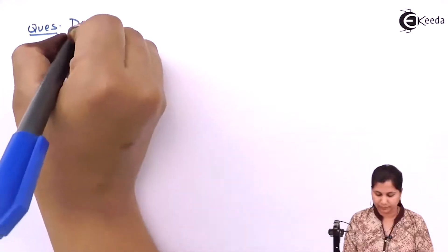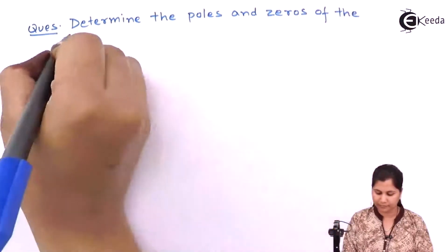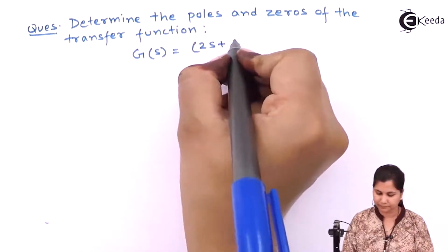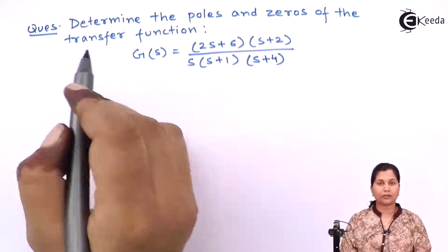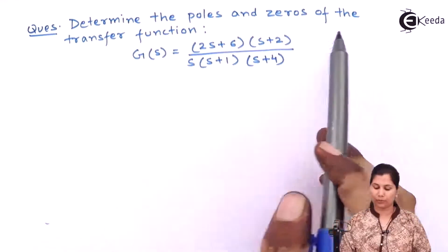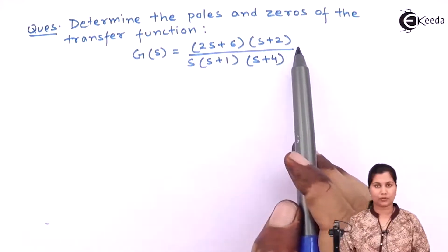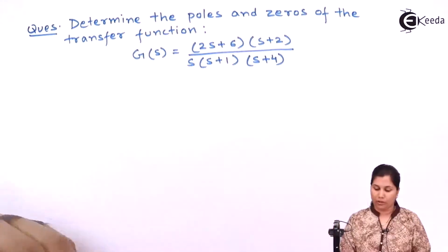Hello friends. In this video we are going to solve a problem on finding the poles and zeros of a transfer function. We have to determine the poles and zeros of the transfer function given by (2s + 6)(s + 2) divided by s(s + 1)(s + 4). So let's solve this question.